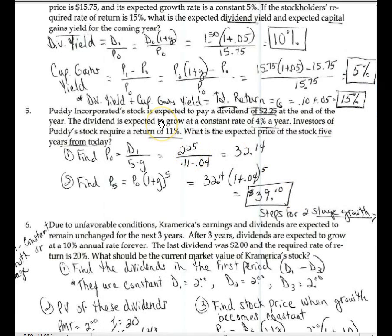Problem number five: Putty Incorporated stock is expected to pay a dividend of $2.25. Since it's expected to be paid at the end of this year, that's your D sub one. The dividend is expected to grow at a constant rate of 4% per year — that's your growth rate G. Investors require a rate of return of 11% — that's your R sub S. The question is: what's the expected price of this stock five years from today? First, find P sub zero using the Gordon model, and you should find it's $32.14.